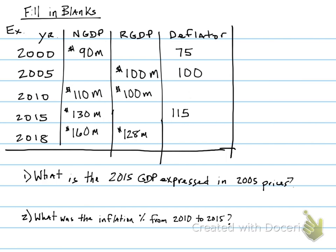I have created an example with five different years and some blanks that we need to fill in using the two formulas we just went over. The first thing we need to do is identify which year in our example is the base year. One thing that should stand out is that in the base year, the price index is always going to be equal to 100.